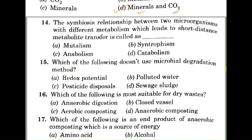Question number fourteen: the symbiotic relationship between two microorganisms with different metabolisms, which leads to short-distance metabolite transfer, is called — A: mutualism, B: syntropism, C: anabolism, D: catabolism. Anabolism and catabolism are not symbiotic relationships. Among A and B, the correct answer is B, syntropism. An example is methanogenic archaea present in the gut of termites.